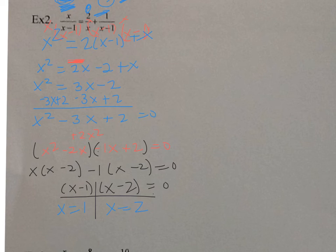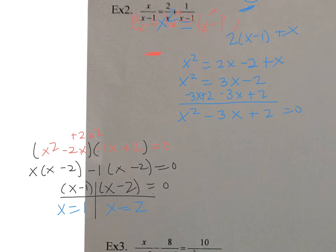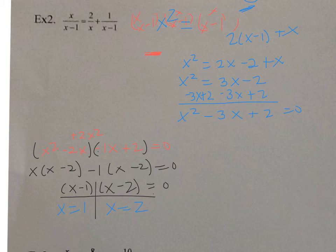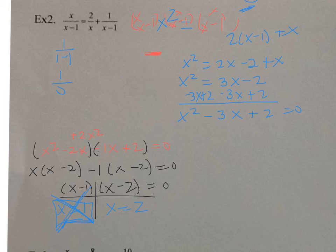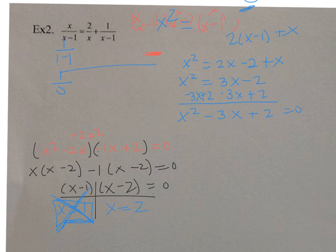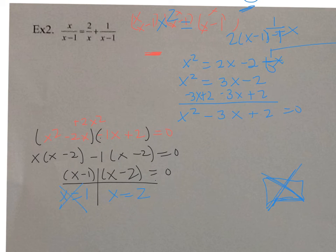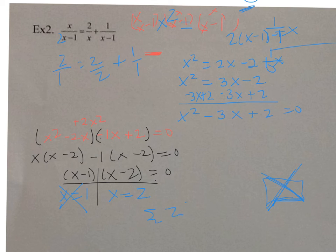Now you have to check this. Look at my original equation and look what happens when I plug in 1. I have 1 over 1 minus 1 - this can't happen because then I get 1 over 0, and that's undefined. So this will not work - that's called an extraneous root, so you have to cross it out. Now what about when I plug in 2? 2 will be good because I'll have 2 over 2 minus 1 which is 1, equals 2 over 2 plus 1 over 2 minus 1 which is 1. So that's good. My solution is 2 - my only answer. Remember, 1 was extraneous - it made it undefined.